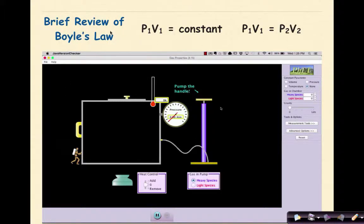Let's do a brief review of Boyle's Law. Boyle's Law from Regents Chemistry was this formula right here: P1V1 = P2V2, where P represents pressure and V equals volume.